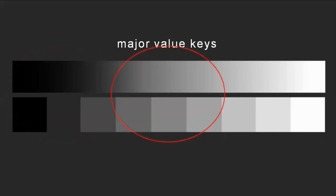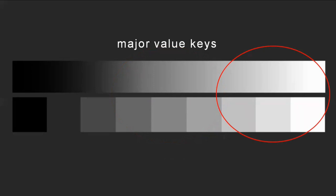Similarly, if you use mostly middle-range tones but still use some very darks and some very lights — a small expanse of those — and most of your composition is made up of middle values, then you might say that your image is working in a middle major value key. And similarly, if you use mostly light tones in your image, in your design, and you also use some of the darker values, possibly even a small amount of black, then you might say that you're using a high major value key.